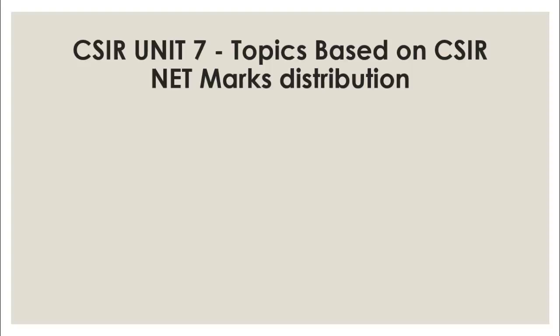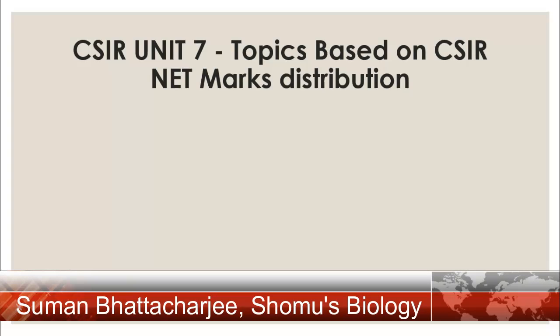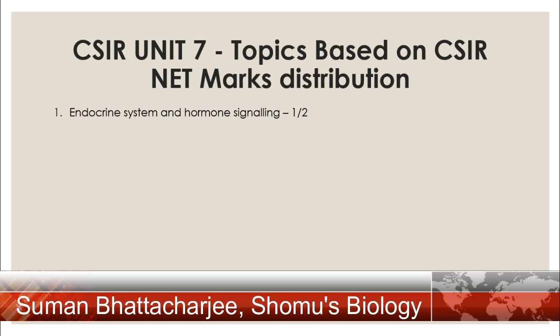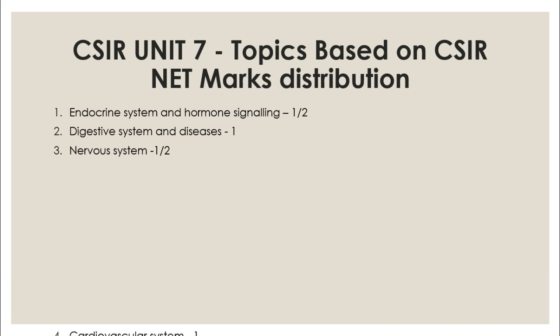Unit 7 for CSIR NET Exam is Human Physiology. The most important topics from Human Physiology in CSIR NET Exam are: Endocrine System and Hormone Signaling (1-2 questions), Digestive System and Diseases (1 question), and Nervous System (1-2 questions).